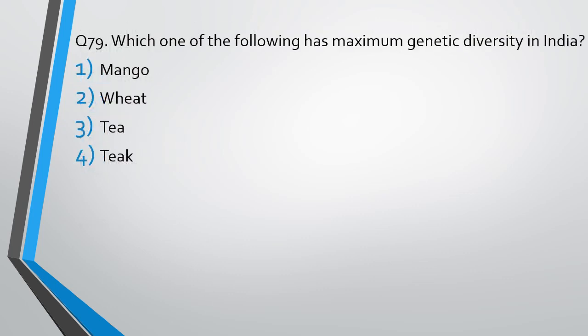Question number 79. Which one of the following has maximum genetic diversity in India? Mango, wheat, tea or teak? The correct answer is option 2, wheat.